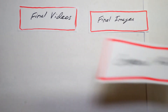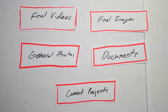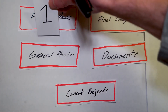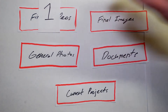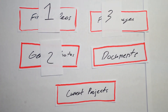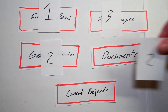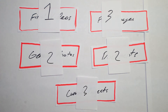In terms of redundancy, this system leaves me with one location for final videos, three locations for final images, two locations for general photos, two locations for documents, and three locations for current projects.